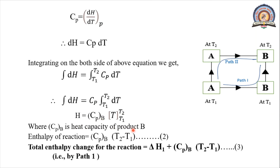The enthalpy change for heating B is CpB·(T2 − T1), where CpB is the heat capacity of product B. So the total enthalpy change for the reaction by Path 1 is: ΔH1 + CpB·(T2 − T1).